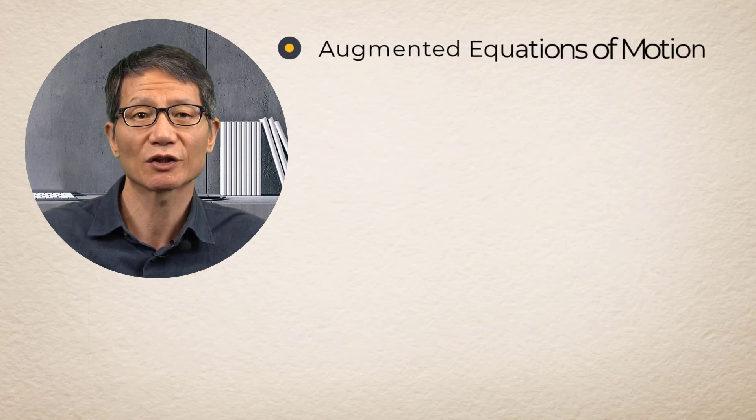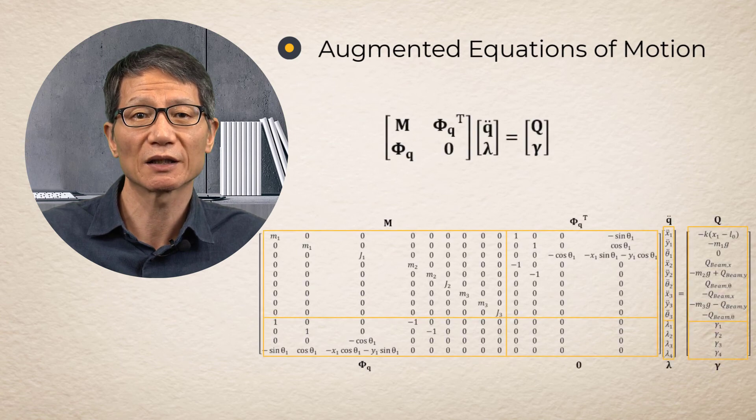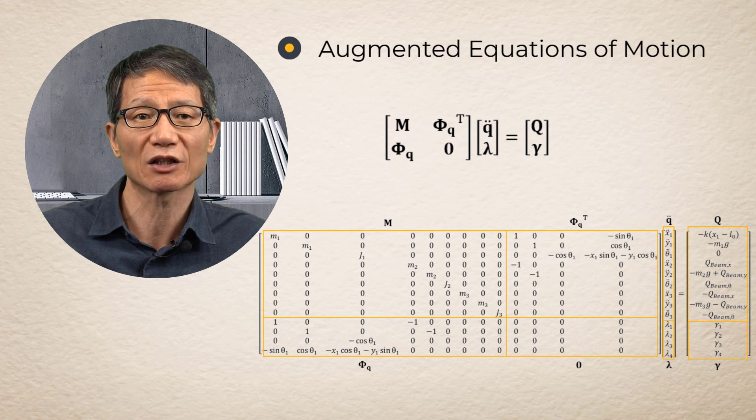Augmented equation of motion for the example. Finally, the augmented equations of motion are obtained as in this equation in a matrix form.